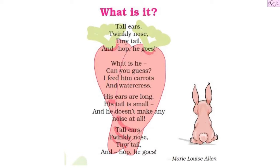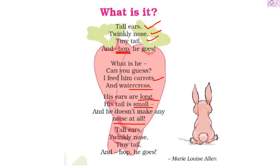Tall ears, twinkly nose, tiny tail, and hop he goes. This poem is sort of a riddle — they have described characteristics of a certain animal and are asking us what it is. The animal has tall ears, a twinkly nose, a tiny tail, and hops. The owner feeds him carrots and watercress. His ears are long, his tail is small, and he doesn't make any noise at all.